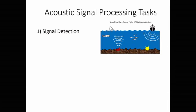Acoustic signal processing has three main tasks. The first is signal detection—finding a specific signal among many sound sources. A good example is the search for the black box of Flight 370 lost in the ocean. There are many underwater sound sources: ship noise, seismic activities like earthquakes, schools of fish, and marine mammals. Among all these, we needed to find the black box by looking for its specific frequency and bandwidth.